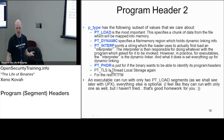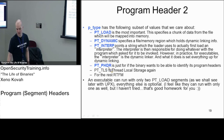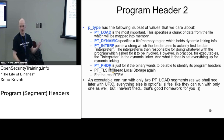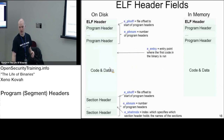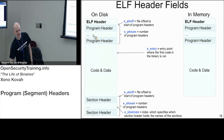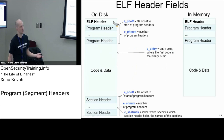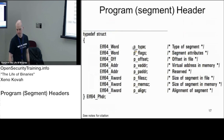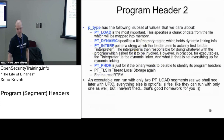The last segment type we care about is PT_PHDR. It doesn't matter much but you'll see it commonly. PT_PHDR is a segment that contains the program headers themselves — that array of program header entries. But since we already have all that information in the ELF header, it's somewhat redundant.